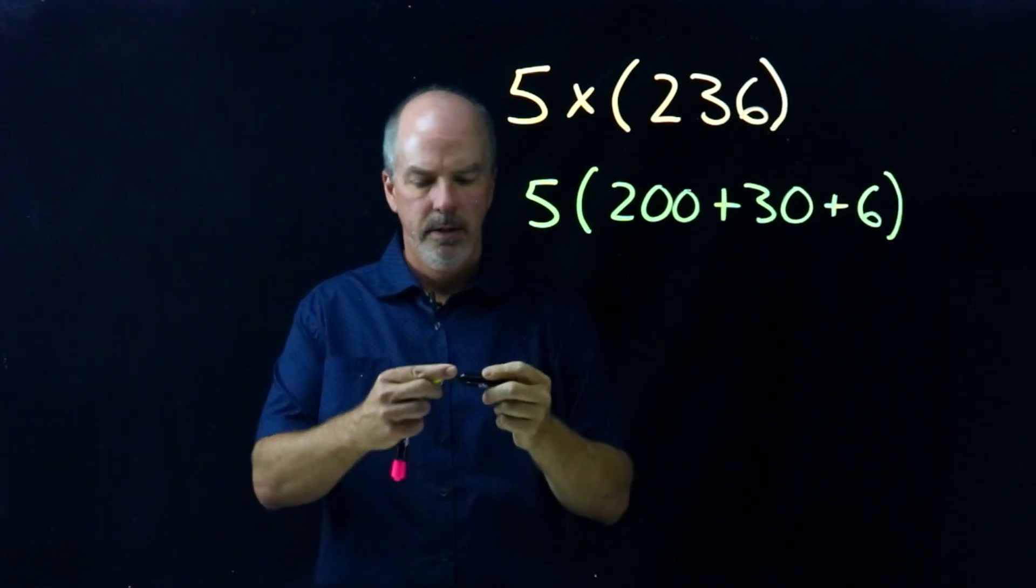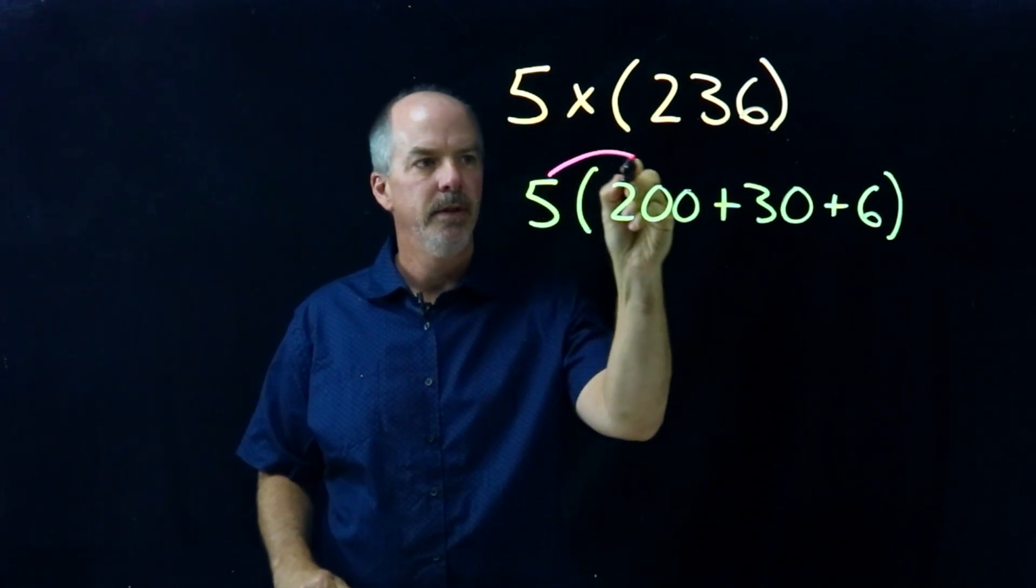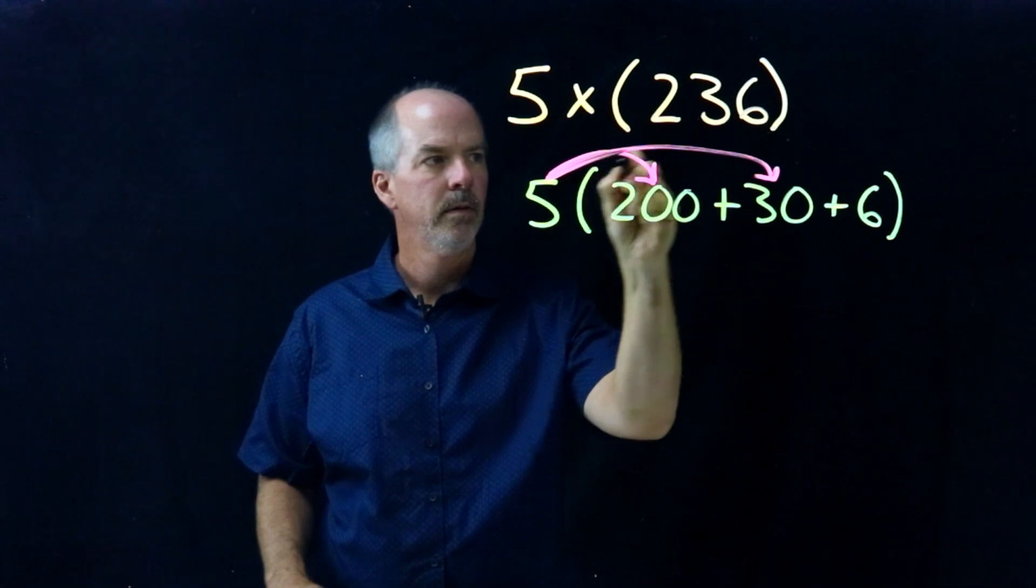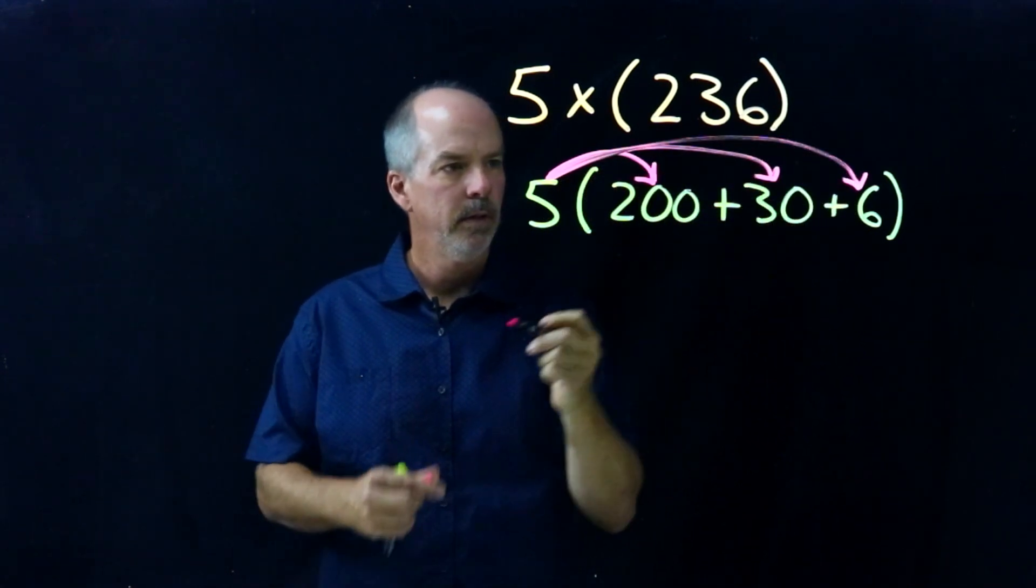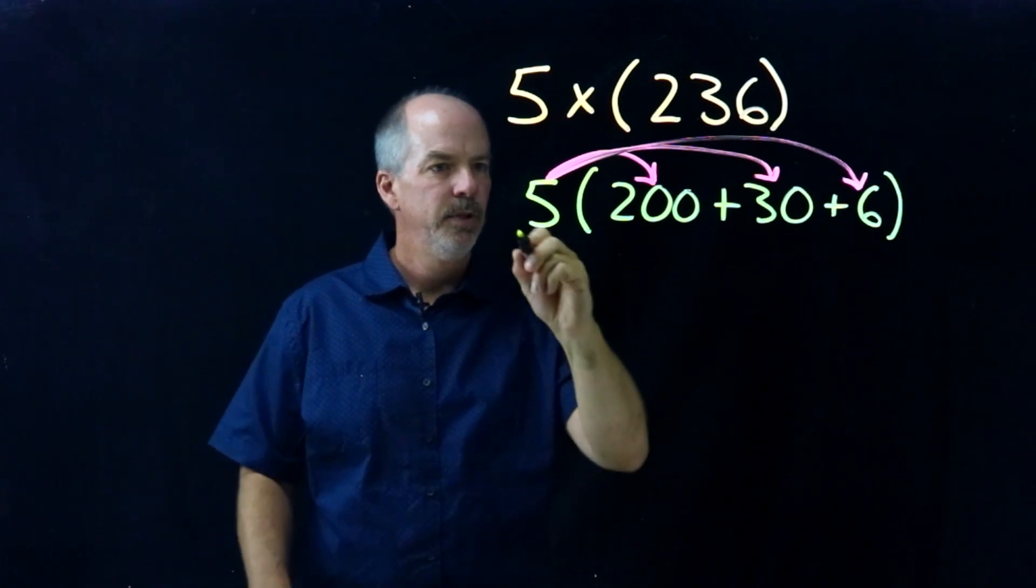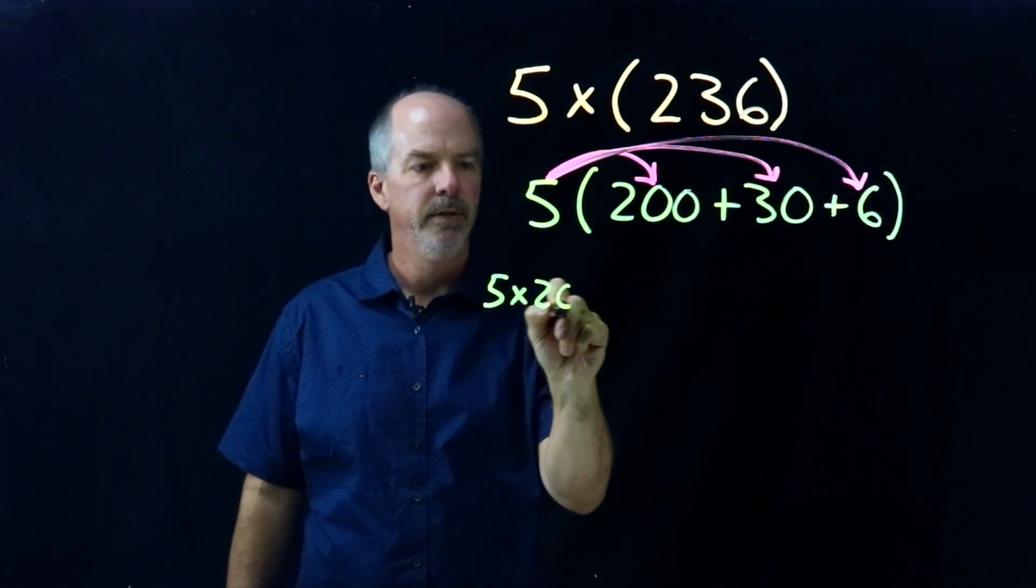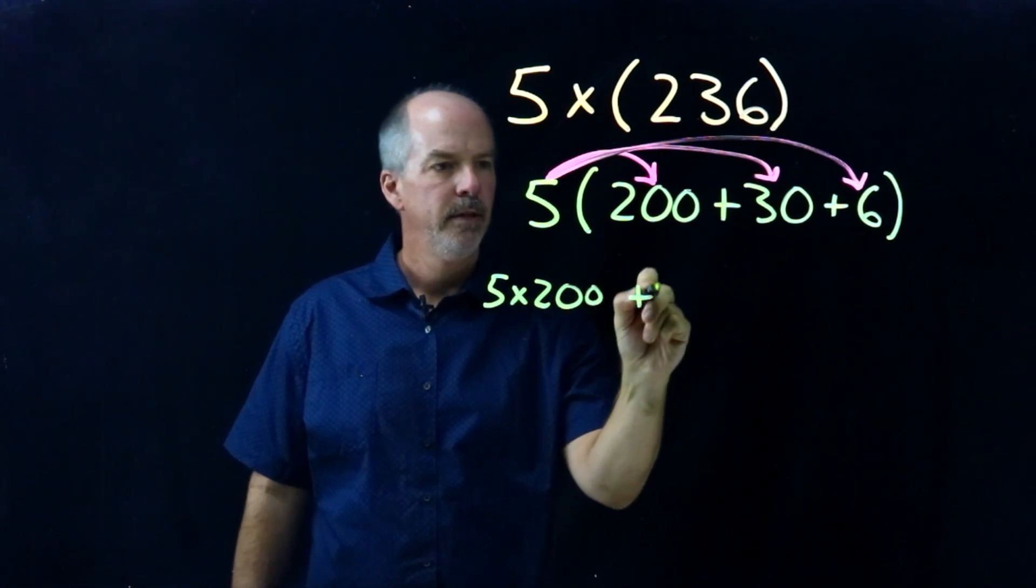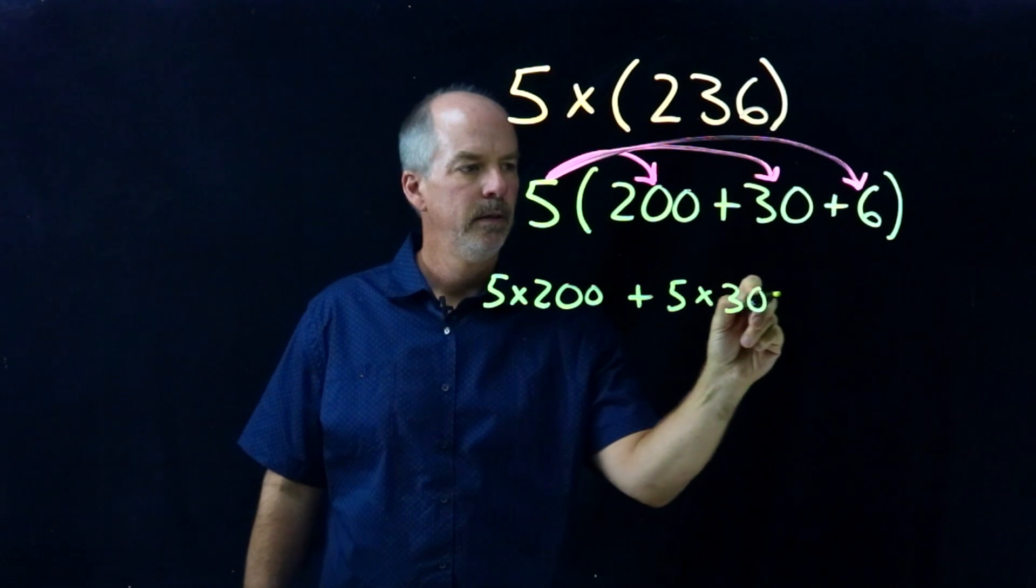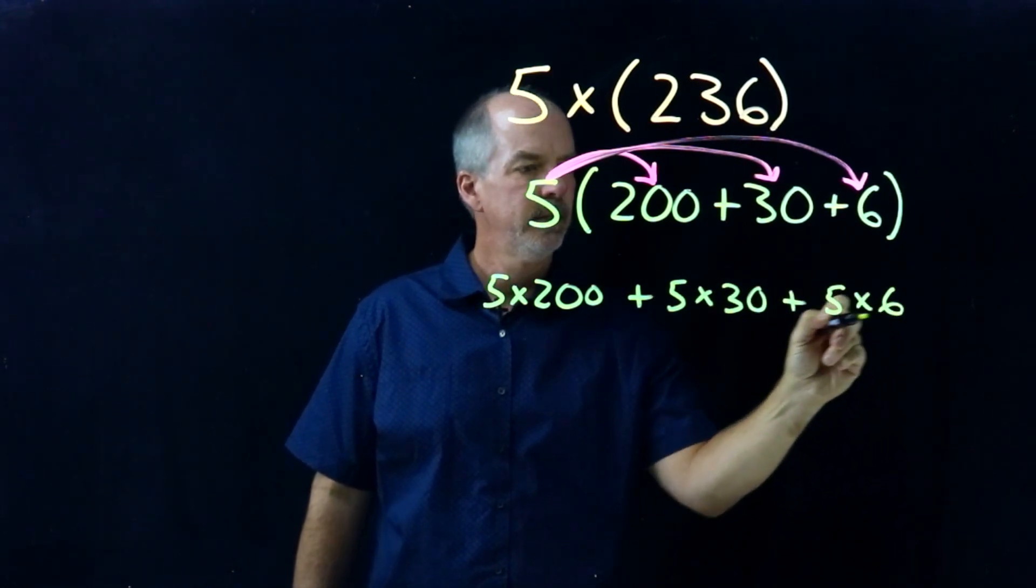And now I can distribute the five into the parentheses. So I have five times two hundred, just write it out this time, five times two hundred plus five times thirty plus five times six.